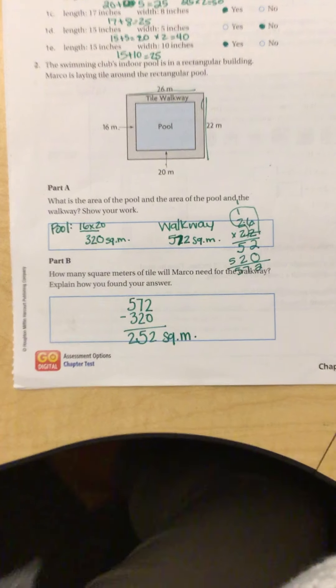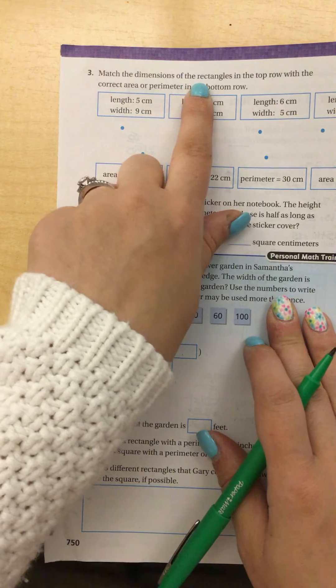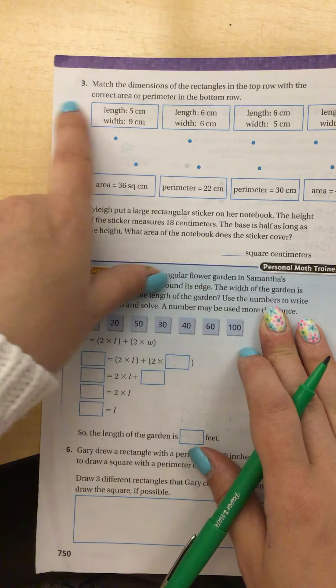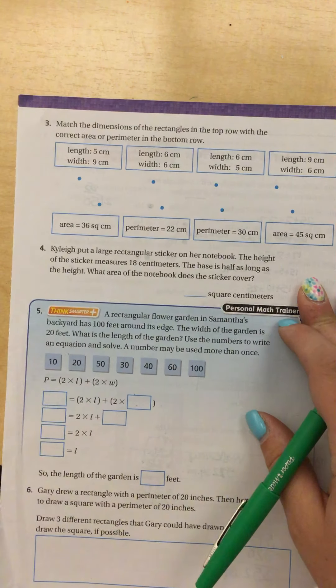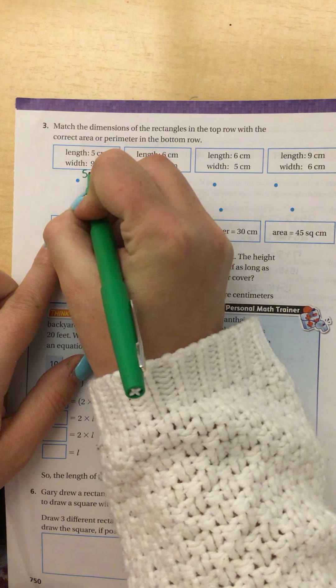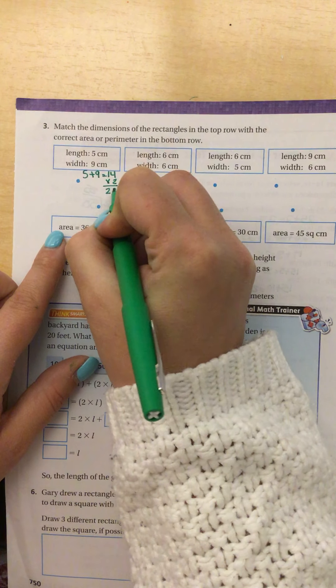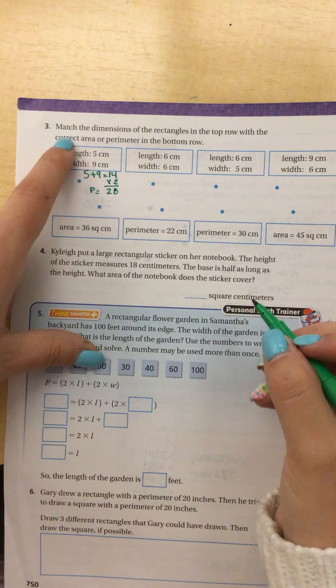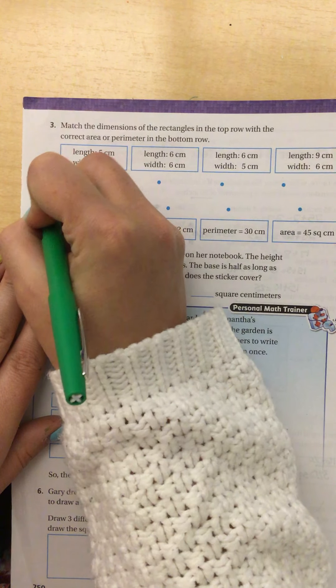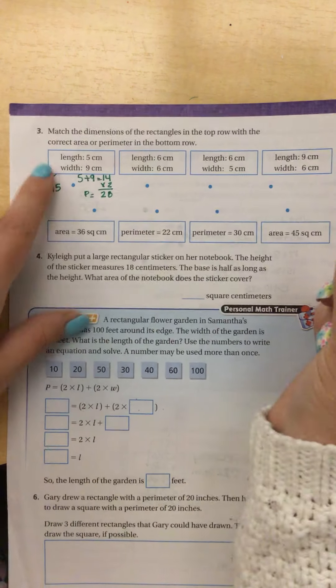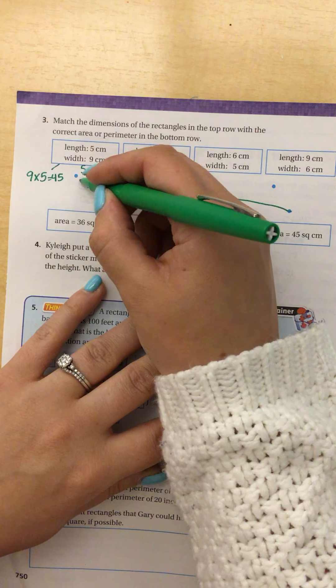Okay, question 3 says that we are matching the dimensions of the rectangle in the top row with the correct area or perimeter in the bottom row. So I've got to check both. So if I add these together, 5 plus 9 equals 14, and if I multiply that by 2, the perimeter would be 28. 28 is not one of my options. So if I do the area, that would be 9 times 5 is 45. And that's the area. So I can see that this one does match. So I'm just going to draw my line right over that one.